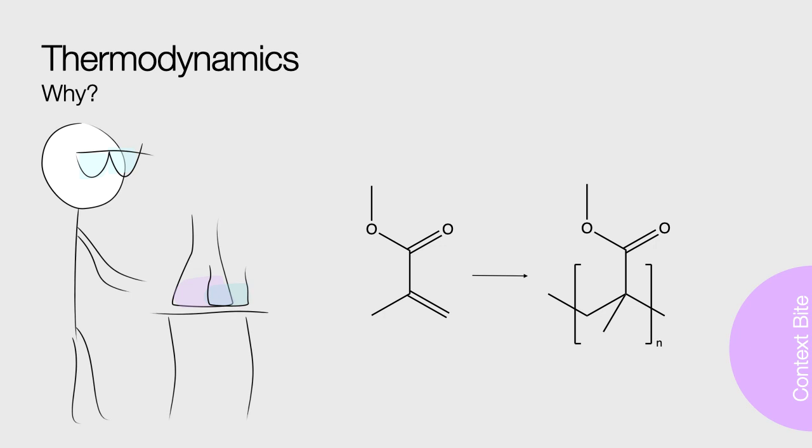This polymerization reaction is exothermic, it gives out energy in the form of heat and so it raises the temperature of its surroundings. For every mole of methyl methacrylate we react, it will give out 58 kilojoules of heat. That is enough to boil about 100 milliliters of water from room temperature.